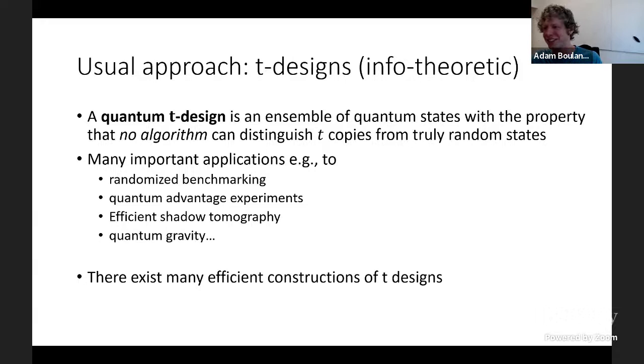T-designs are an information-theoretic form of pseudo-randomness with many important applications in randomized benchmarking, efficient shadow tomography, etc. There exist many efficient constructions of T-designs—for example, random Clifford circuits are a three-design, and sufficiently deep random circuits are T-designs.